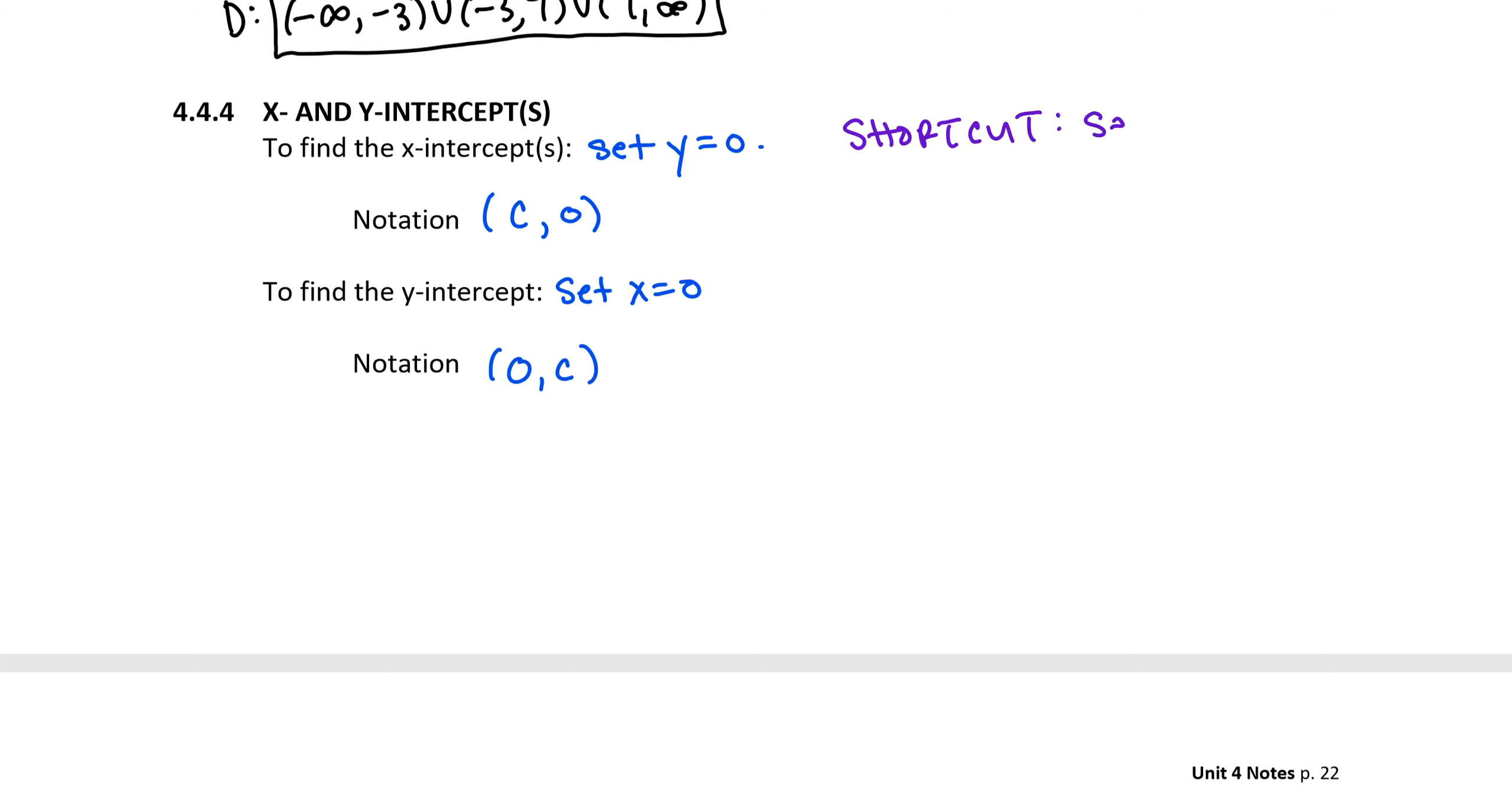is to simply set the numerator equal to 0 and solve for x. So the x intercepts then are the 0s of the numerator.